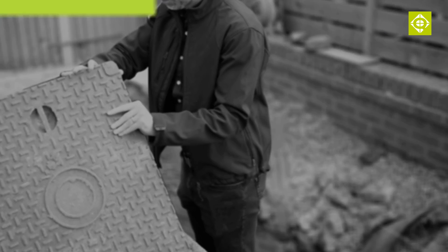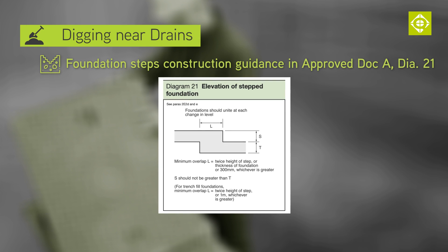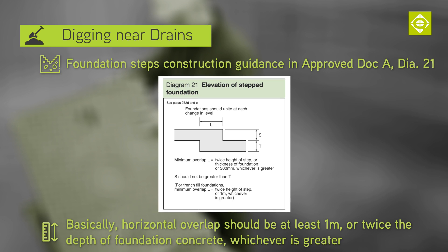There's good guidance on how to construct foundation steps in Diagram 21 of Approved Document A. Basically, the horizontal overlap should not be less than one meter, or twice the depth of the foundation concrete, whichever is greater.